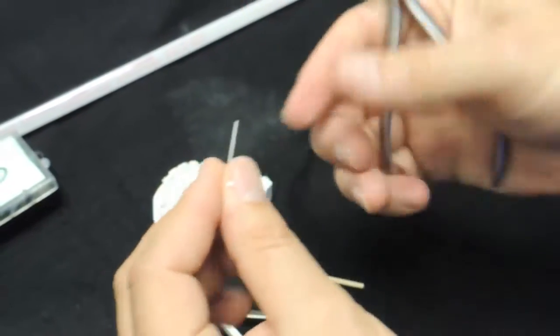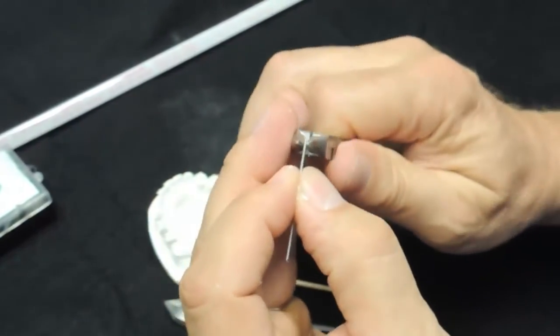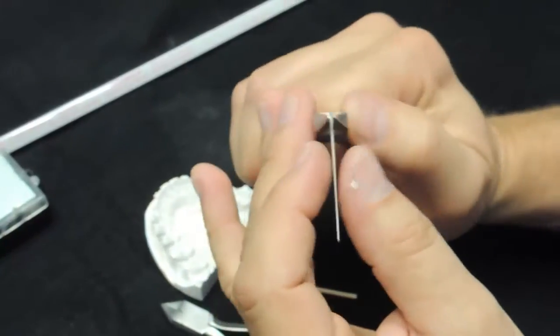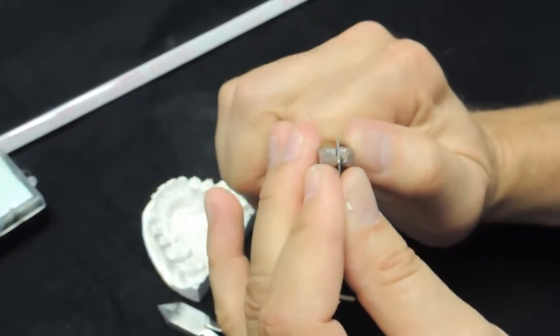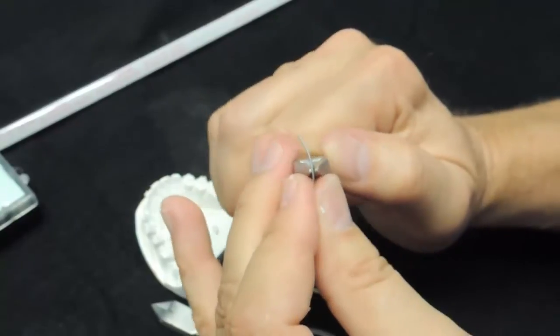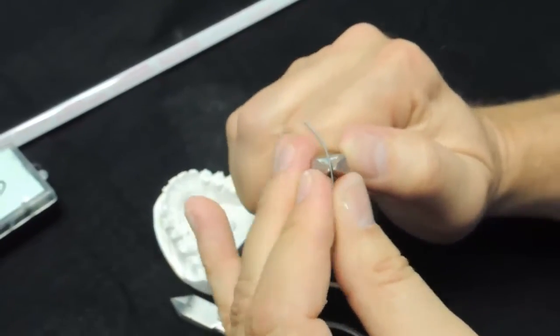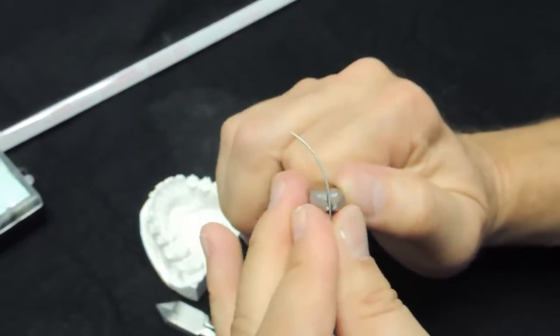The first step in bending the wire is to make the arch form, and I do that just with a bird beak. You can do that with whatever you want to use, you can use a hollow chop plier. I like to just get the arch shape with a bird beak like this.